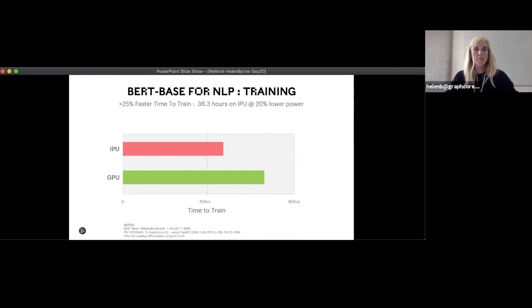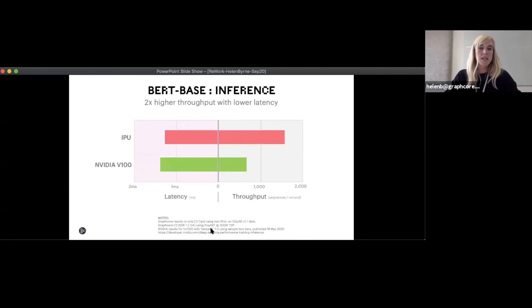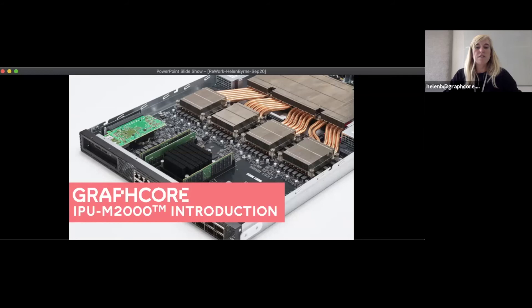For language data, we're able to train BERT base in 25% less time on IPUs, running at 20% lower power. For inference at the lowest latency, we can provide 2 times higher throughput versus GPUs. That covers a lot of benchmarks, many of which are applications used in the financial sector and with our customers — and they were all based on our first-generation Mark 1 chip.